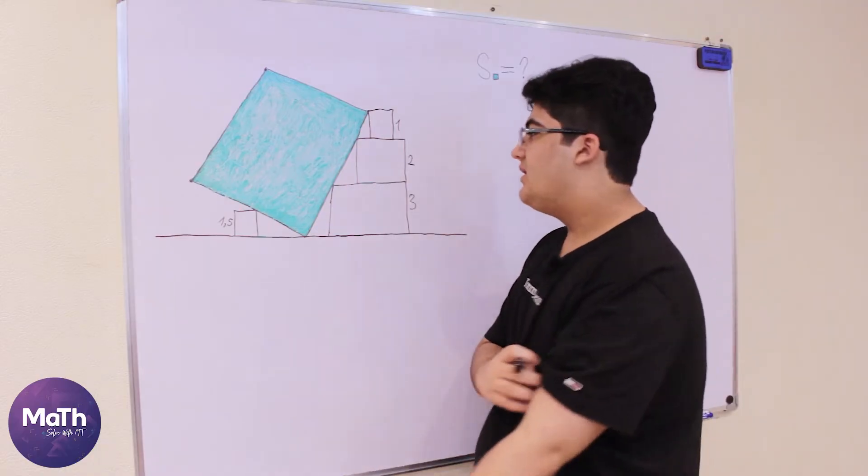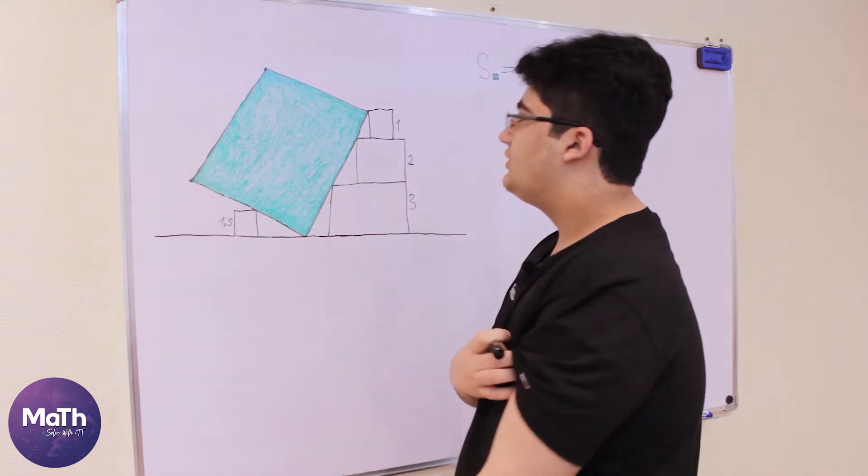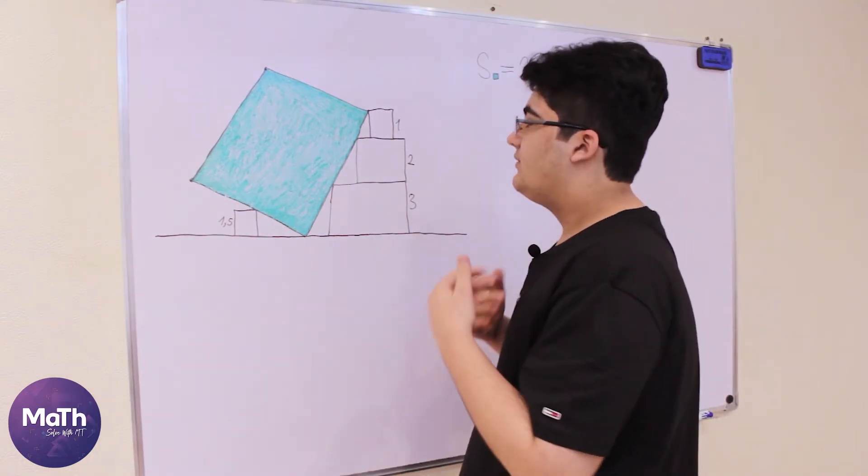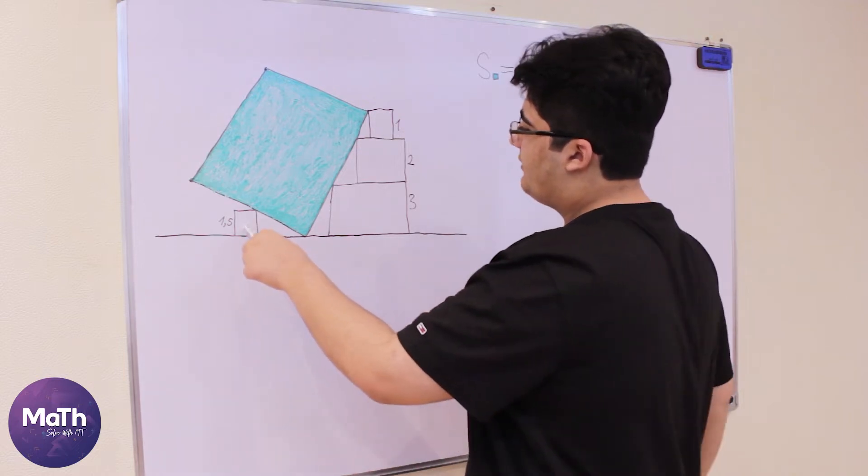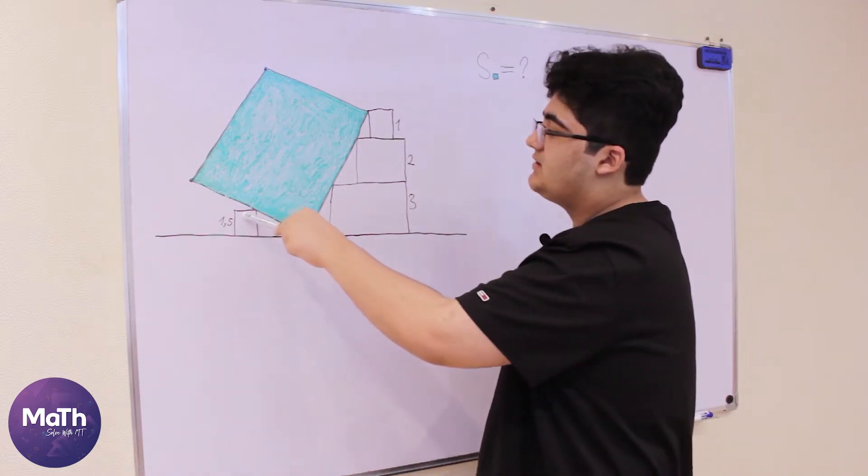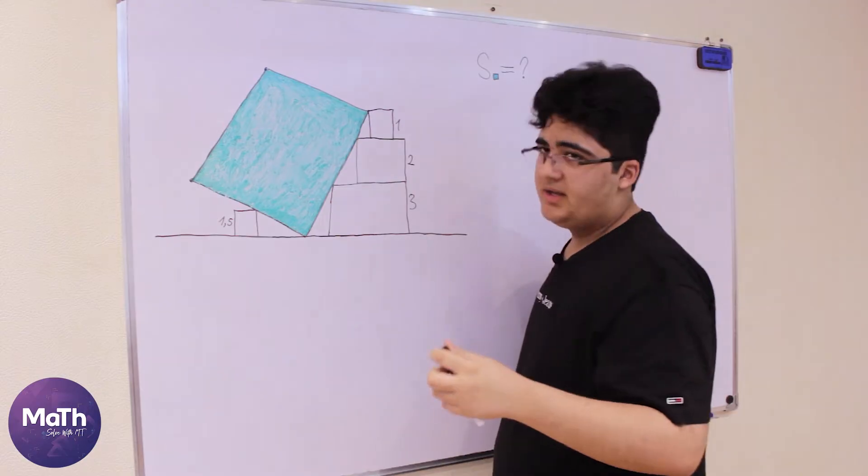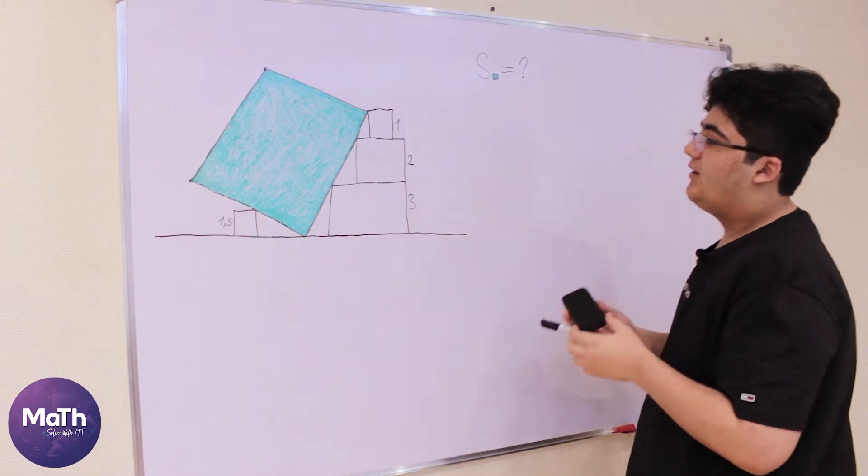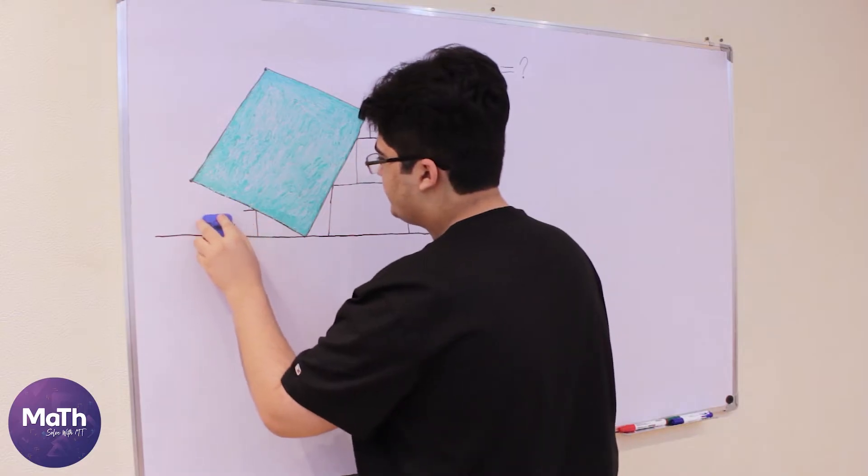For example, we don't need this square with side 1.5 at all, so we can just erase it from here and focus on this part of the problem.